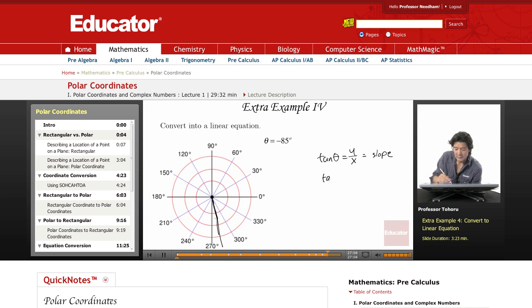So I'm actually going to plug in the value, tangent of negative 85 degrees, equals y over x. Now that happens to come out to negative 11.4. And this actually becomes our slope, m.